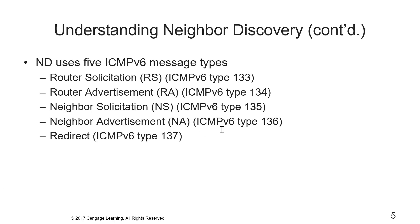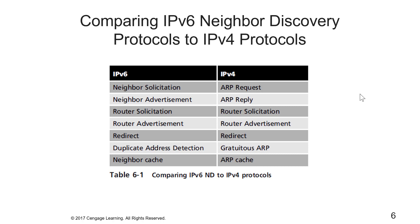There are five ICMPv6 message types: router solicitation, router advertisement, neighbor solicitation, neighbor advertisement, and redirect. Comparing to IPv4: neighbor solicitation is akin to an ARP request; neighbor advertisement is an ARP reply; router solicitation, router advertisement, and redirect all have comparable protocol methods in IPv4; duplicate address detection is gratuitous ARP in IPv4; and neighbor cache is your ARP cache in IPv4.